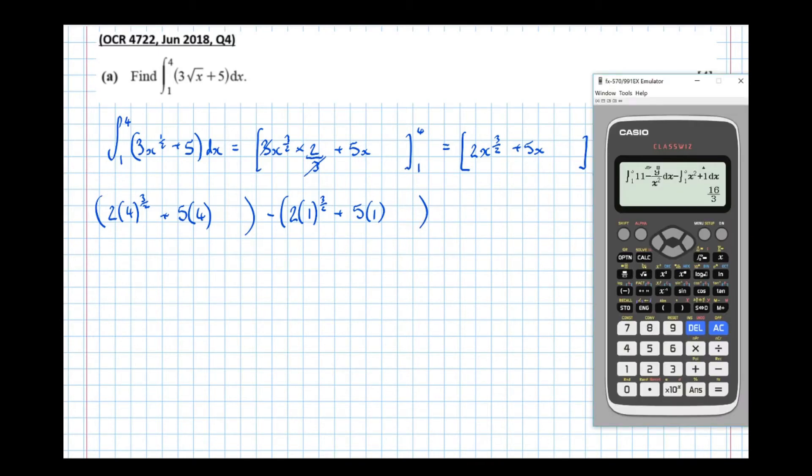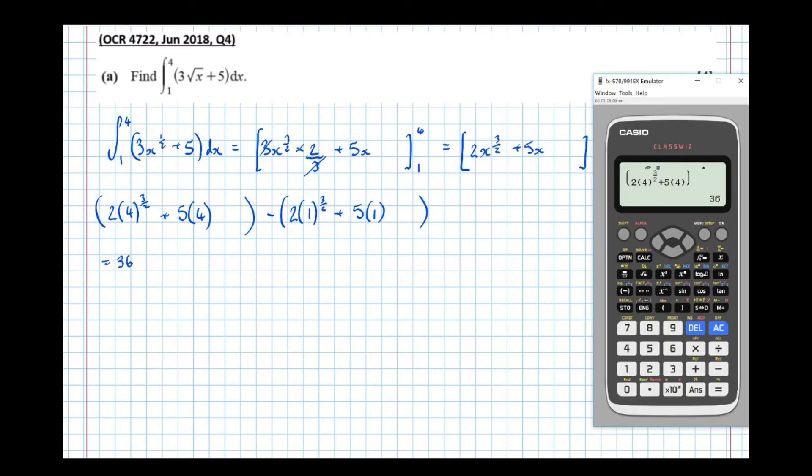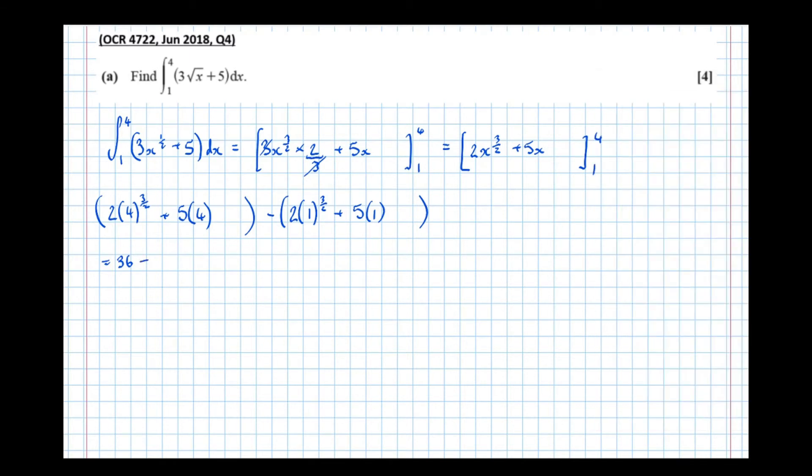Right, so now we're getting the calculator up, and typing these limits in, we get 2 lots of 4 to the power of 3 over 2, plus 5 lots of 4, and that's equal to 36, equals 36, and then replacing the 4 with a 1, we get 7, so 36, take 7, which is 29.